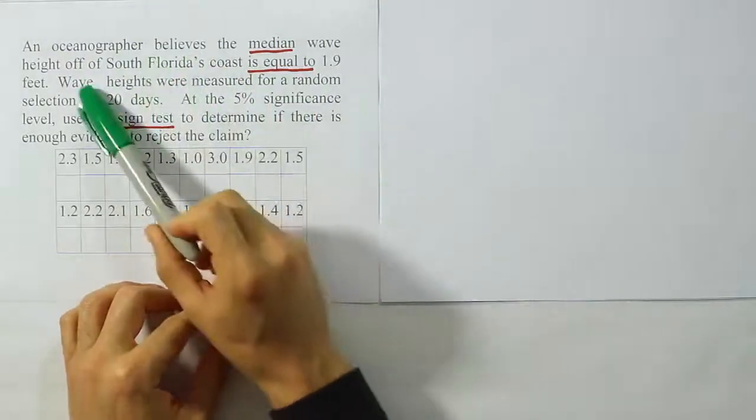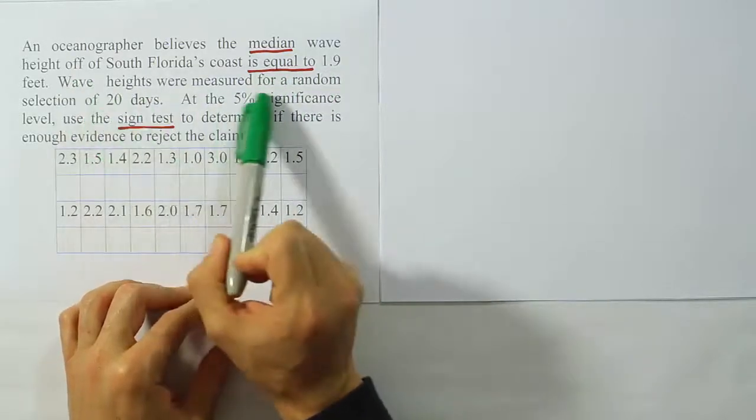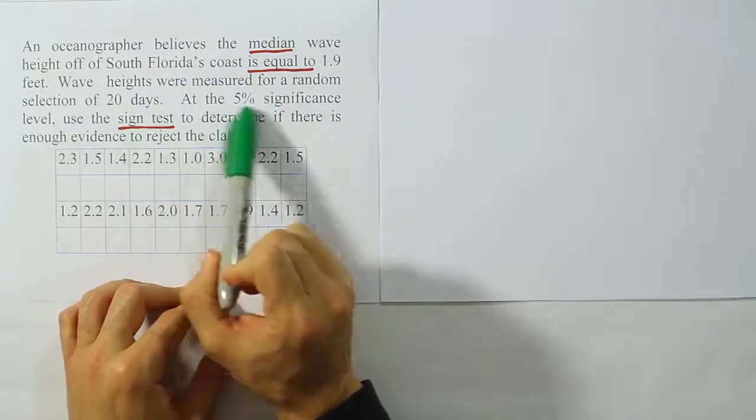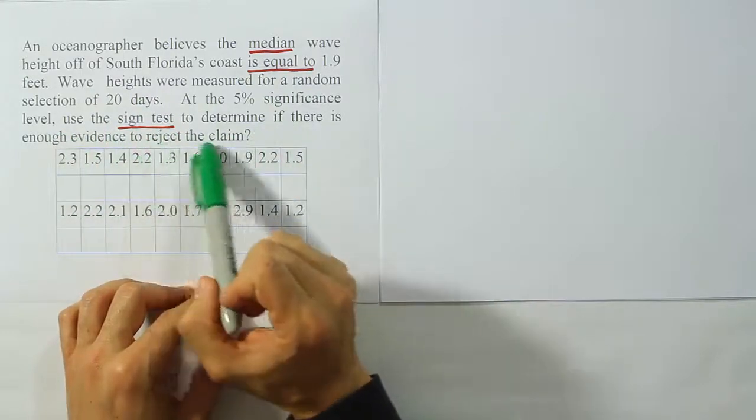An oceanographer believes the median wave height off of South Florida's coast is equal to 1.9 feet. Wave heights were measured for a random selection of 20 days. At the 5% significance level, use the sign test to determine if there is enough evidence to reject the claim.